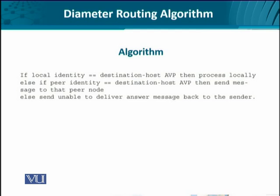With all this information, let's look at the overall routing algorithm. If the destination host AVP is equal to the local identity, it means this is a local phenomenon and the message does not need to be sent to another domain. Or, if it is a peer entity, then the message has to be sent from one relay agent to another, or one proxy agent to a relay agent, or vice versa. If neither applies — meaning it is not a local phenomenon and there is no peer to which it can be forwarded — then the message is delivered back to the sender with an error code.